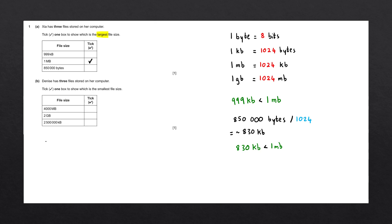Let's convert 4000 megabytes into gigabytes. The calculation we do is we take 4000 megabytes and divide by 1024. This gives us approximately 3.9 gigabytes, meaning that this is going to be larger than two gigabytes — so 3.9 gigabytes is larger than two gigabytes.